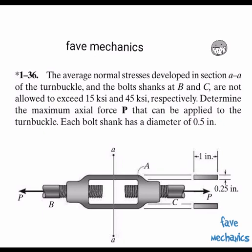This is the given problem. The average normal stresses developed in section AE to AE of the turnbuckle, and the bolt shanks at B and C, are not allowed to exceed 15 KSI and 45 KSI, respectively. Determine the maximum axial force P that can be applied to the turnbuckle. Each bolt shank has a diameter of 0.5 in.